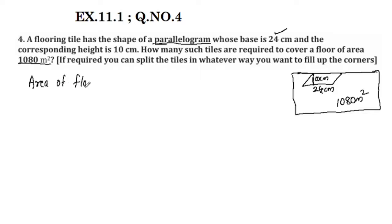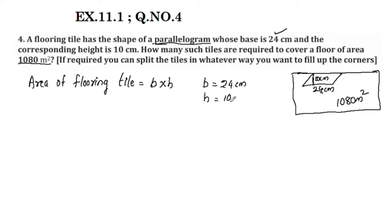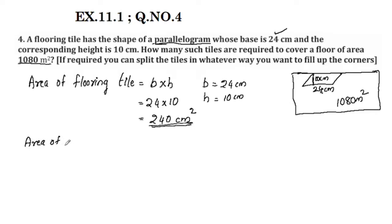The area of a flooring tile is equal to base into height. Now we will get the equation: base × height. Base is 24 centimeters, height is 10 centimeters. Substituting: 24 into 10 is equal to 240 centimeters squared. So the area of one tile is 240 cm².